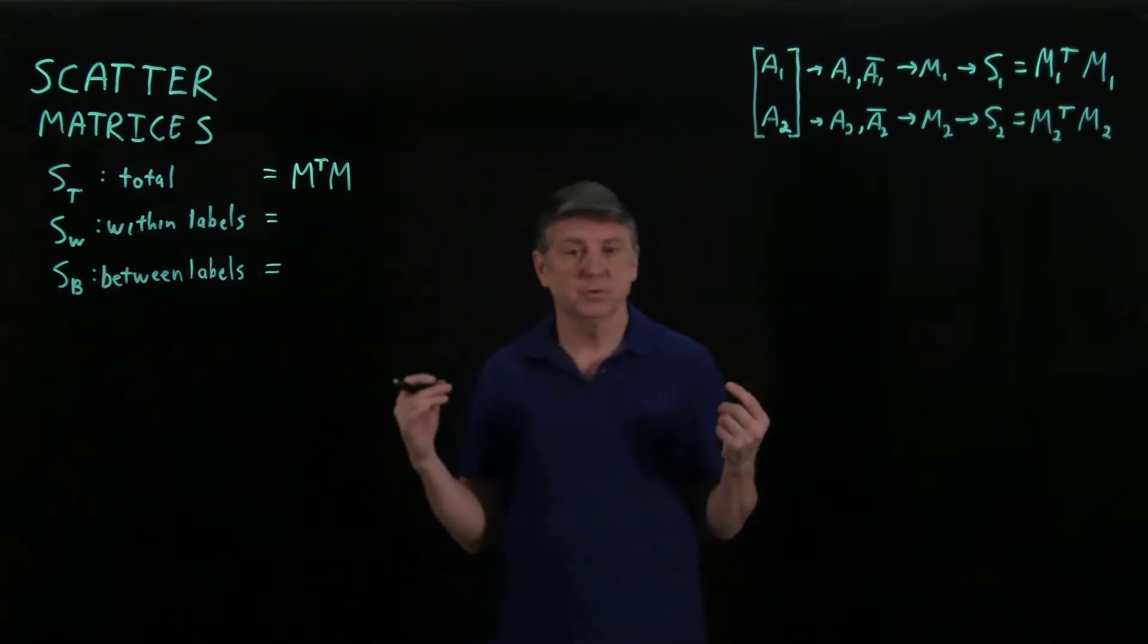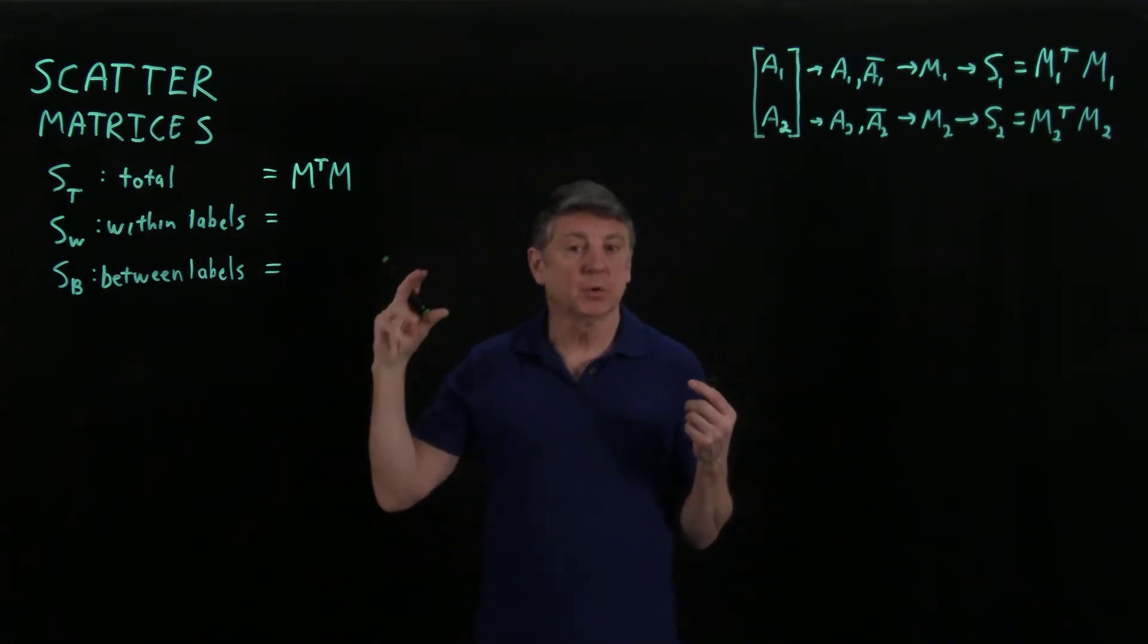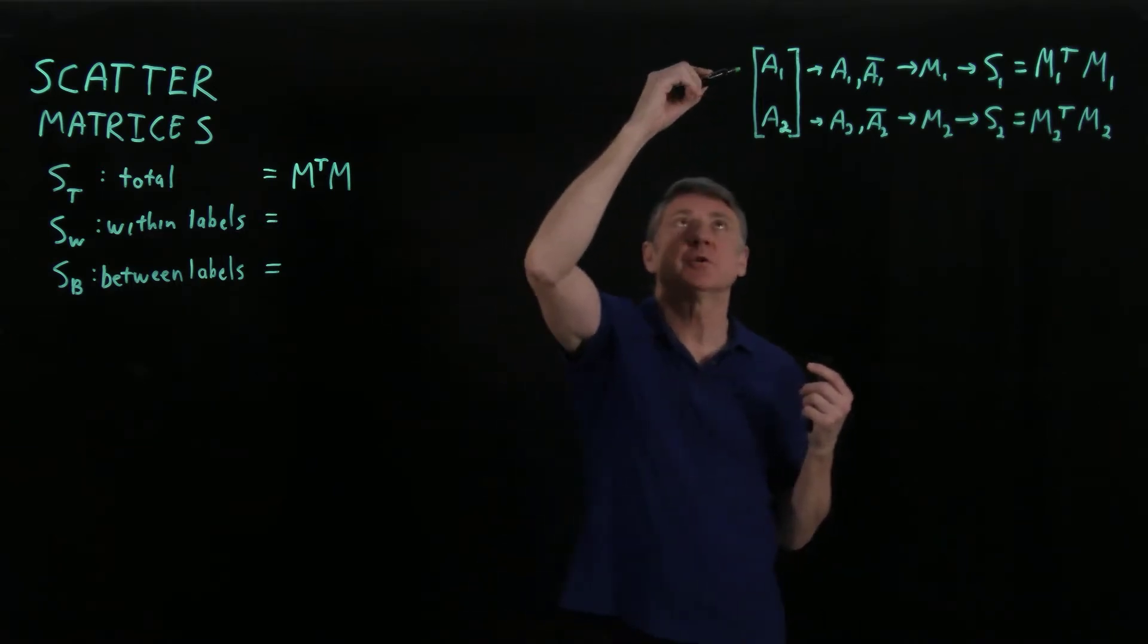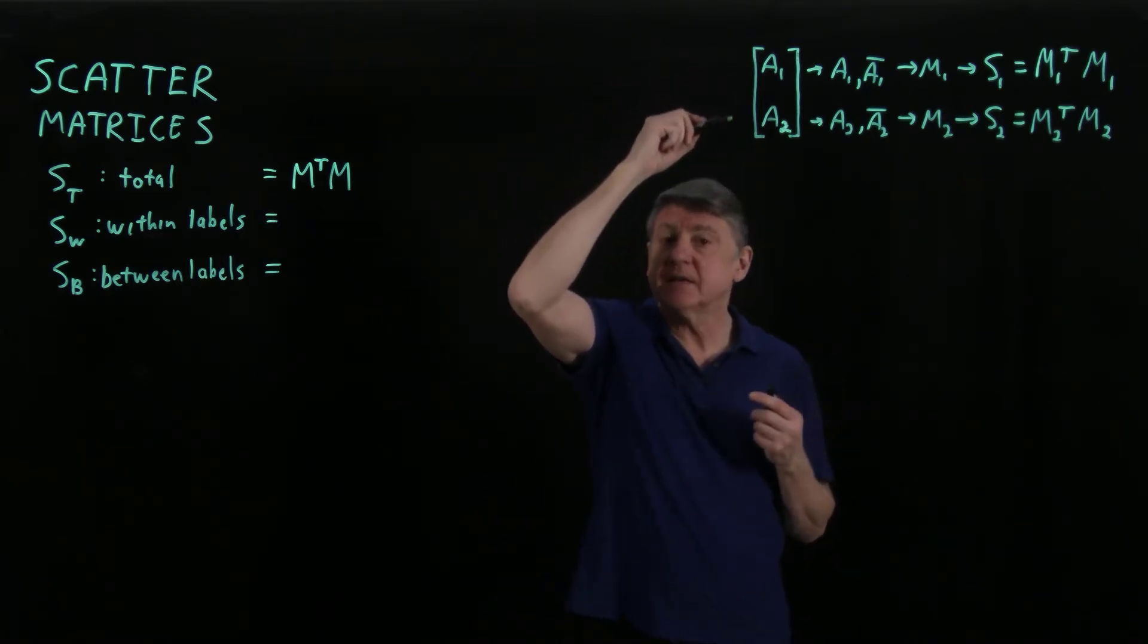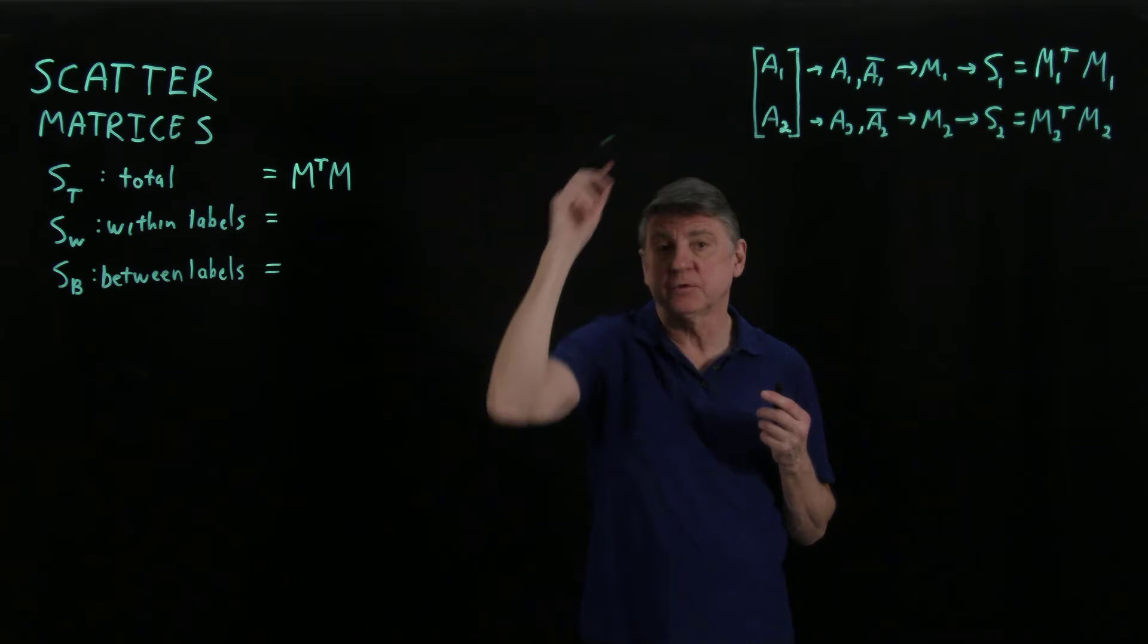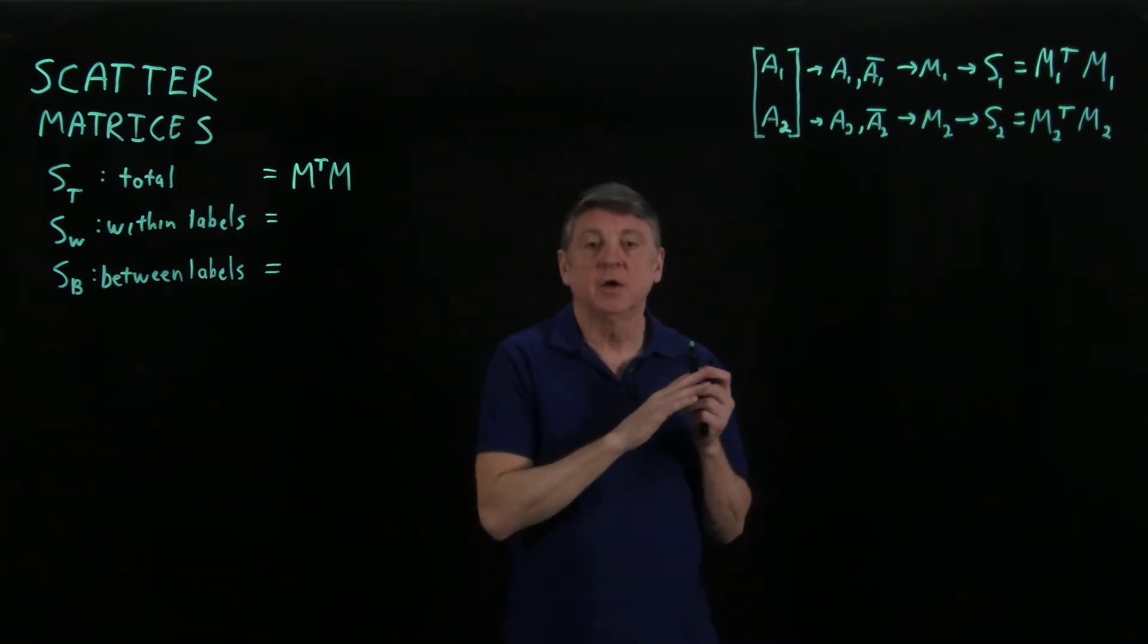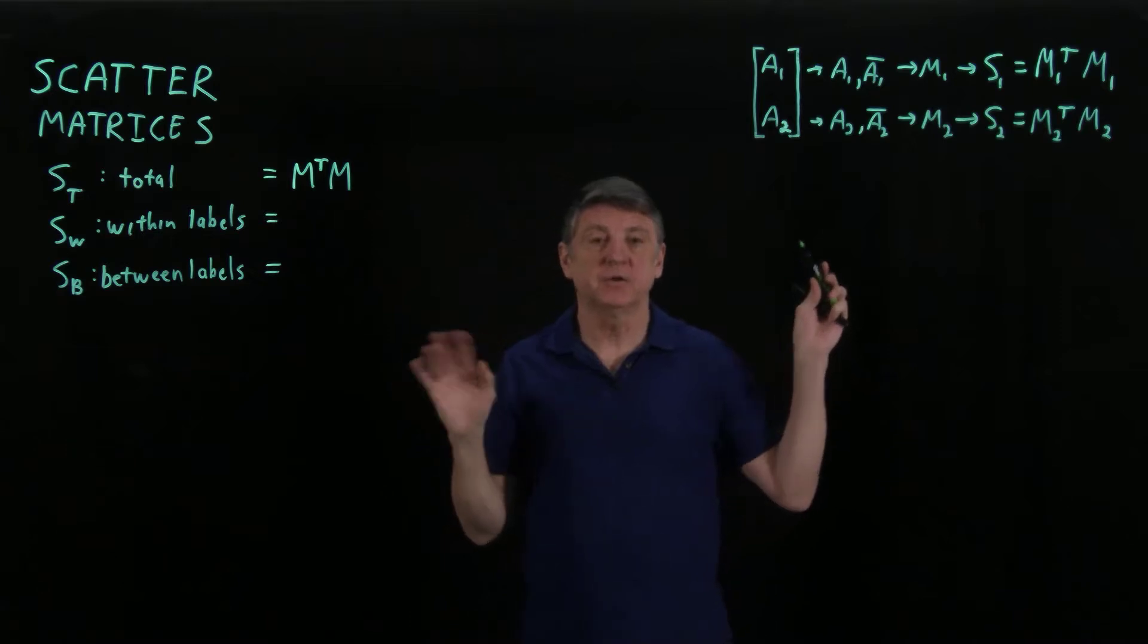So let's suppose that we reorder our observations so that the first set of observations correspond to label one, and the second set correspond to label two. If you're using plus one and minus one, that's okay. You can now think of this as just label one and label two.